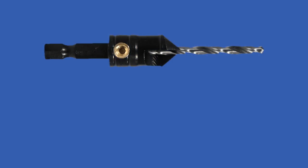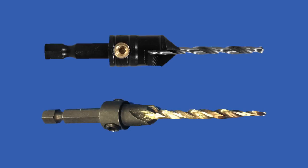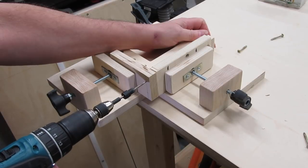Some countersink drill bits have straight twist bits, and some have tapered bits like these. I prefer these tapered bits because they make it easy to get the drill started in the right place.